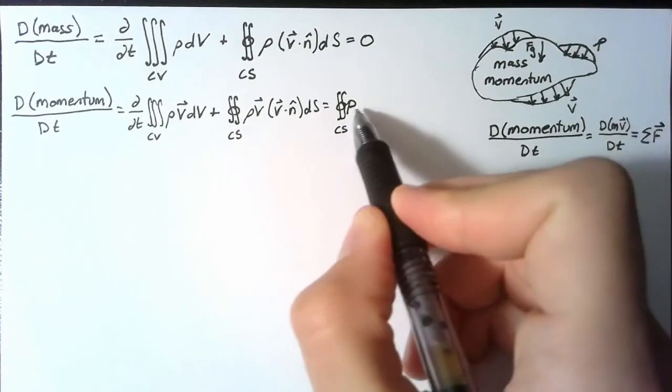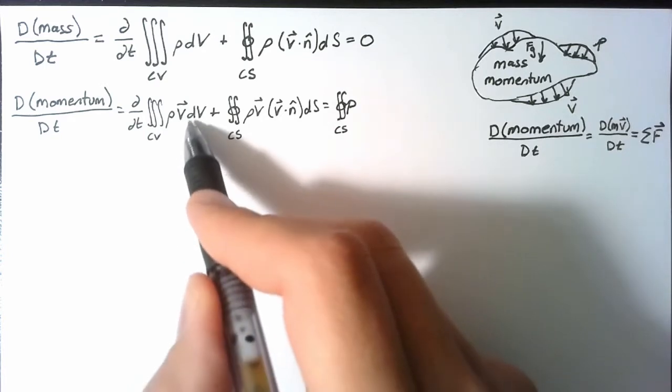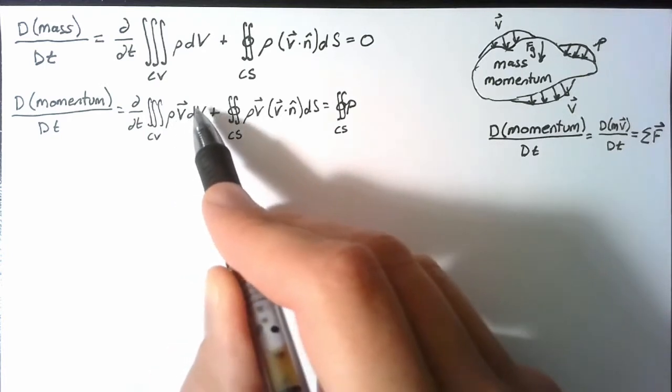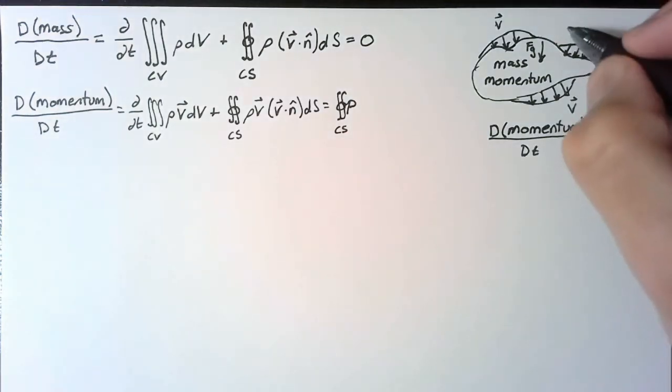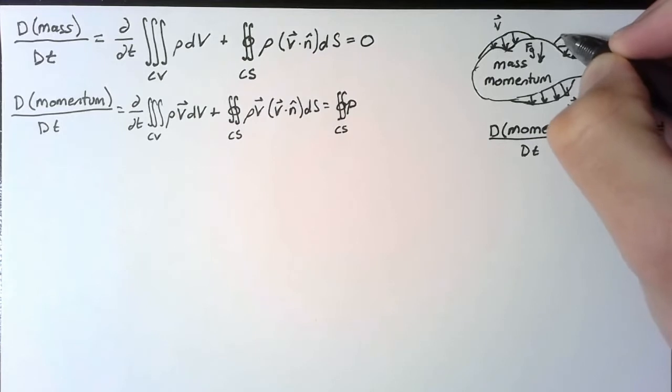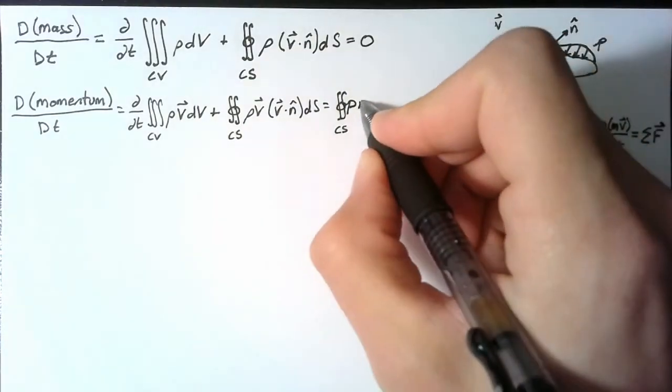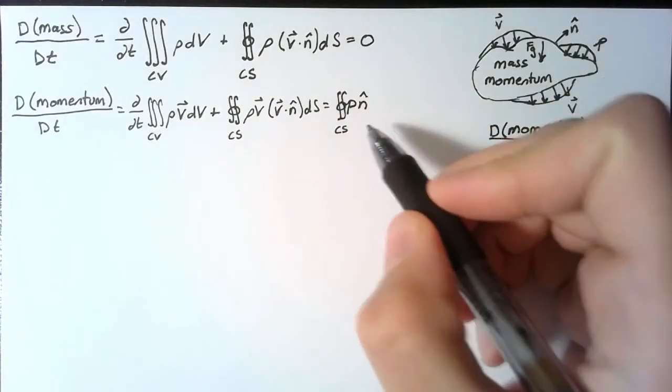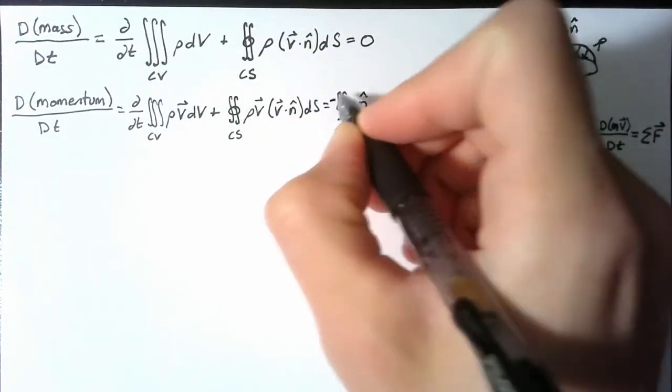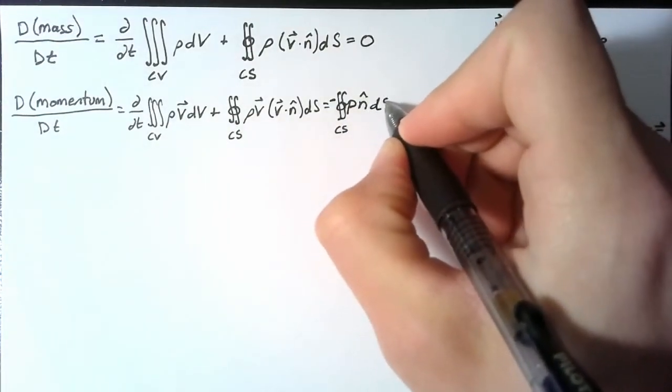So we need to integrate this over our surface. Also we know that this needs some direction. Each of these terms is actually a vector. We have some x, y, z components that we could split each of these terms into. So the pressure is acting in a direction, and that direction is directly against the normal direction. So we could turn this into a vector by multiplying it by the unit normal. But then this would be going in the wrong direction. So we need to put a negative sign here too.